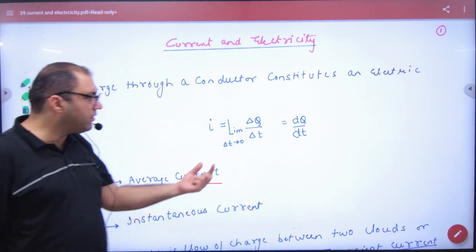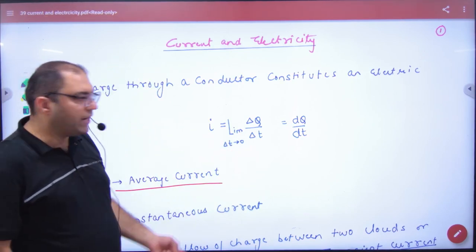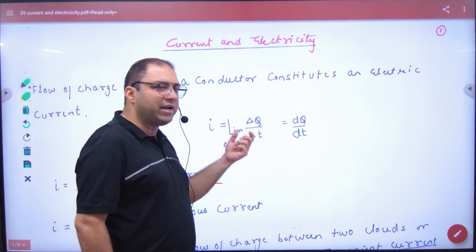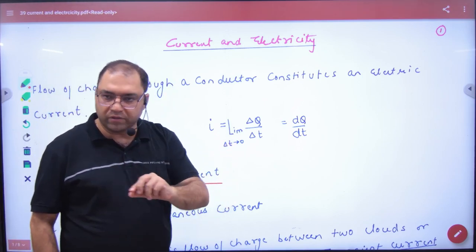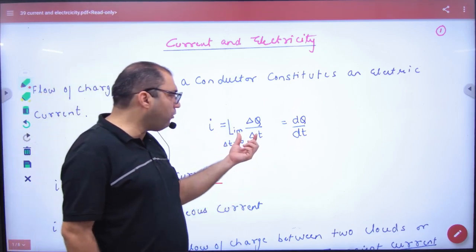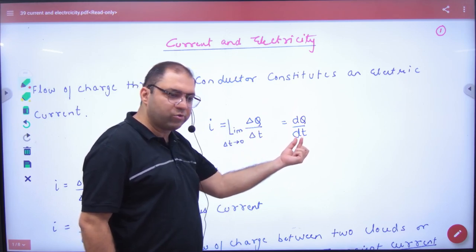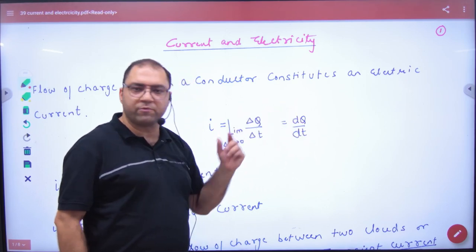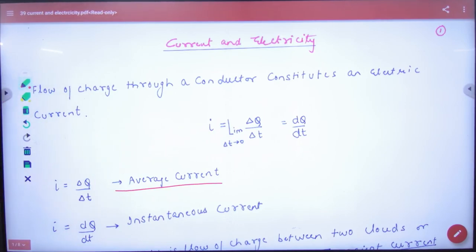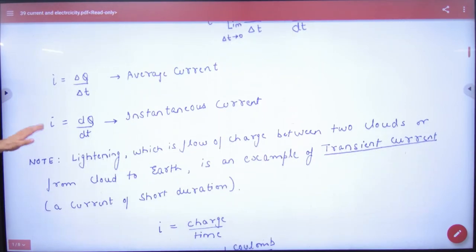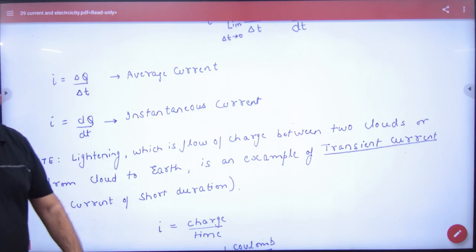Now we will learn the limits. Delta q by delta t, now delta t interval, if it is very small, or if its limit approaches to 0, then the interval will be very small. Then delta t will be converted to dt, and delta q will be dq. So dq by dt is instantaneous value of current.